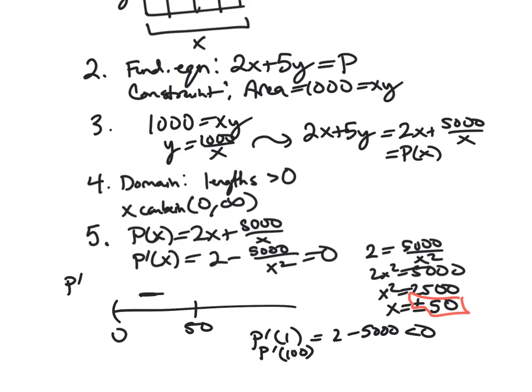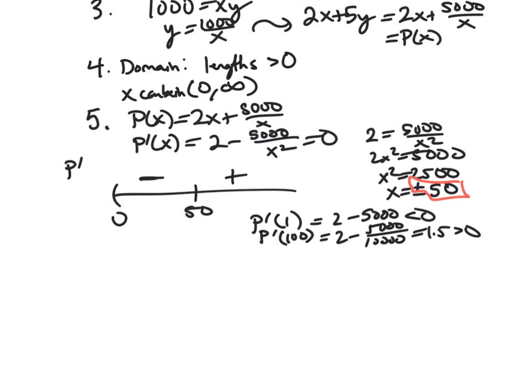And then P prime of, say, I don't know, 100. Again, something somewhat easy to square is 2 minus 5,000 over 10,000. And 5,000 over 10,000 is a half. So this is 1.5, which is positive.